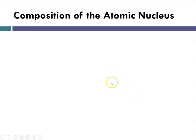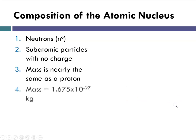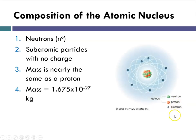Continuing with the composition of the atomic nucleus: neutrons have the symbol N superscript 0. They are the subatomic particles with no charge, and their mass is nearly the same as a proton at 1.675 times 10 to the negative 27 kilograms. We now have a more complete picture of the atom, with electrons outside the nucleus, and protons and neutrons inside the nucleus.